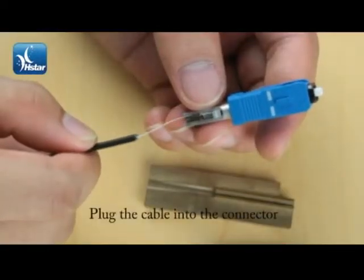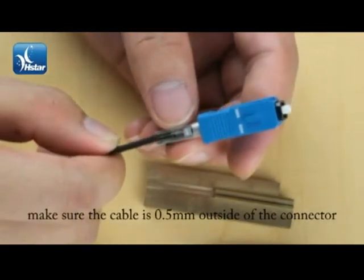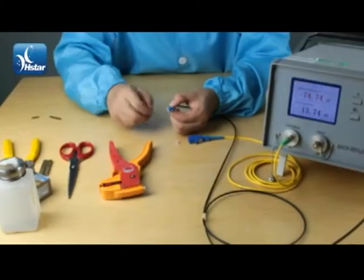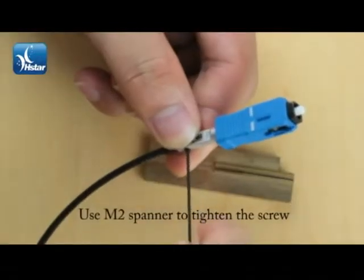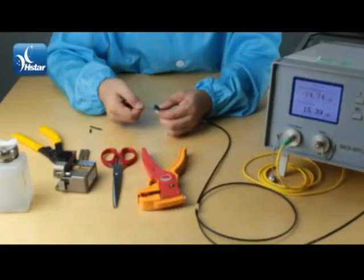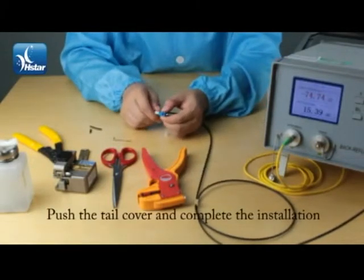Plug the cable into the connector. Make sure the cable is 0.5 mm outside of the connector. Use M2 spanner to tighten the screw. Push the tail cover and complete the installation.